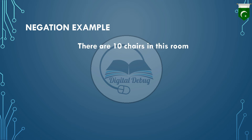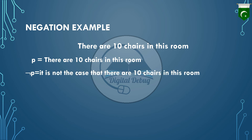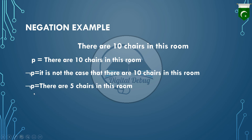Let's take an example. The original statement given is: 'There are 10 chairs in this room.' We represent this with variable P. Then the negation of P can be written as: 'It is not the case that there are 10 chairs in this room.' Originally the proposition was true, so as a result the negated statement's truth value will be false.